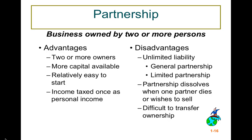A partnership is a business owned by two or more people. The advantages are two or more owners, more capital available, it's relatively easy to start, and income is taxed once as personal income. The disadvantages include unlimited liability. In a general partnership, all partners share in gains and losses and have unlimited liability — because of this, written agreements are essential. In a limited partnership, one or more partners run the business and have unlimited liability, but liability is limited to contribution for the others. Another disadvantage is the partnership dissolves when one partner dies or wishes to sell, and it's difficult to transfer ownership.